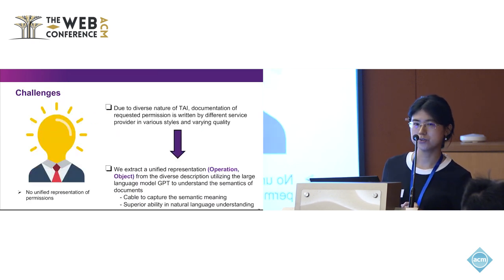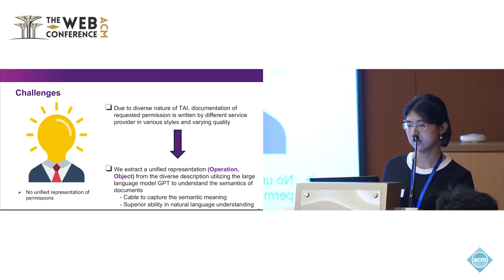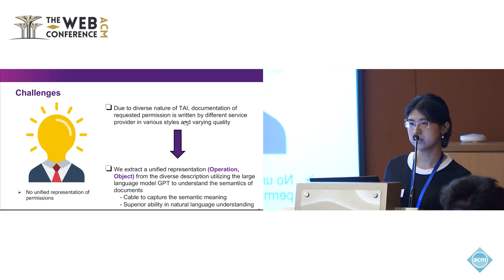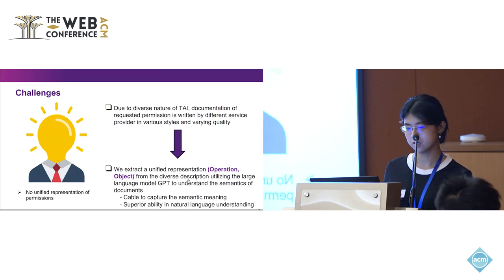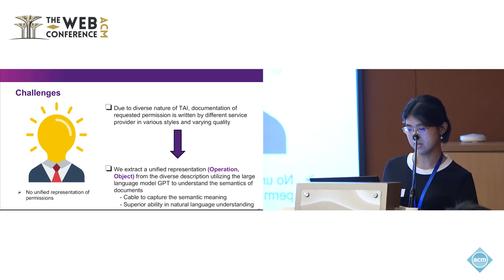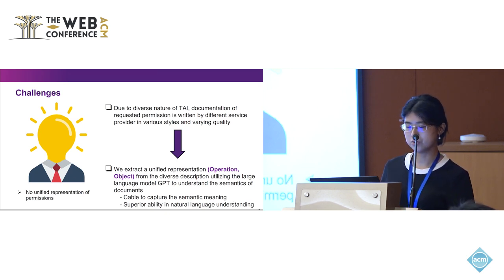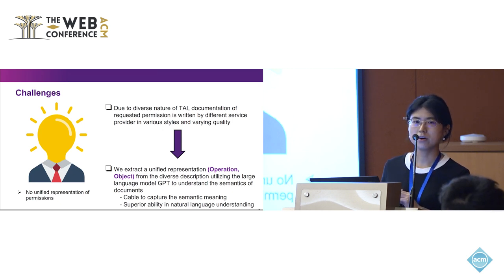We identified three challenges. The first is that due to the diversity of TIE services — including smart home, online storage, and others — the documentation of requested permissions is written by different service providers in various styles and quality. To handle this, we extract a uniform representation of operations on objects from the diverse documentation using a large language model, GPT. It shows excellent performance capturing semantic meaning in natural language, not only at the word level like 'delete your file,' but also at the phrase level like 'turn on or turn off your devices.'